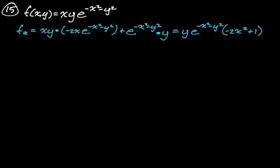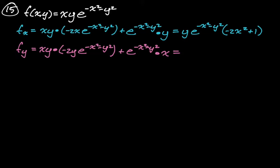I definitely encourage you to factor it because you're going to have to set this equal to 0, and if it's not factored, good luck. For partial_y, by symmetry, it's almost exactly the same thing. We get x·e^(−x²−y²)·(−2y²+1). You can see all the x's and y's have just been swapped with each other.